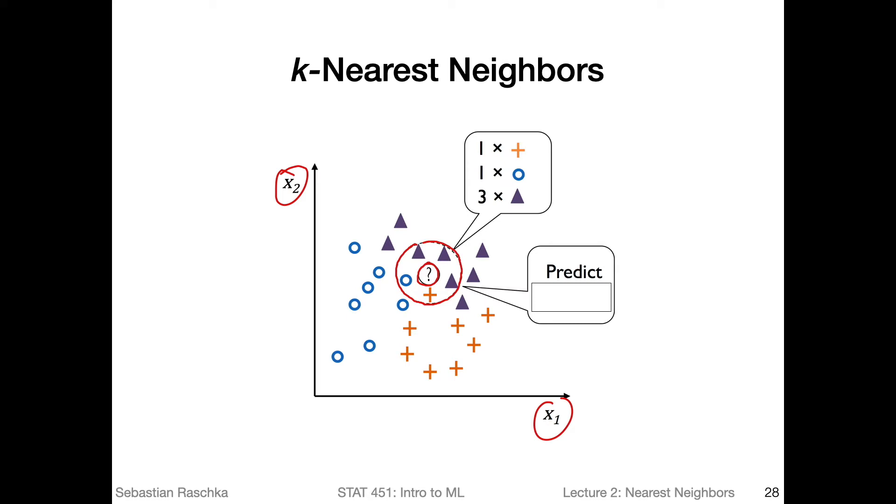If I would consider these neighboring points here to make a prediction about the question mark in the center, what would be the value of k in this k-nearest neighbors approach? Maybe pause the video for a few moments and think about what k could be here.